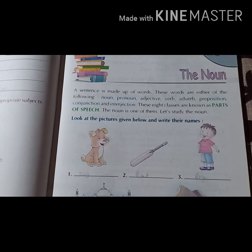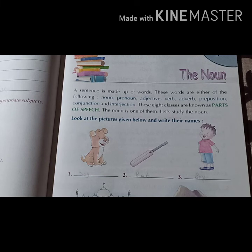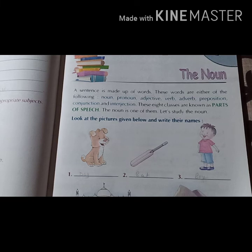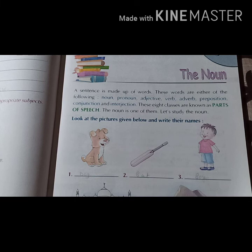So here you can see pictures are given. These pictures have some particular names — suppose that dog, boy, bat. So these are the names of things, places, animals. So noun is the name of any person, place, animal or thing.